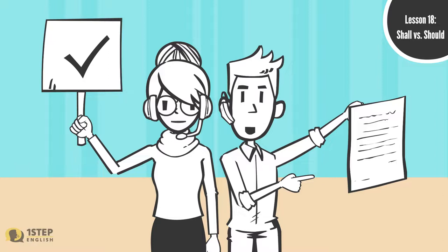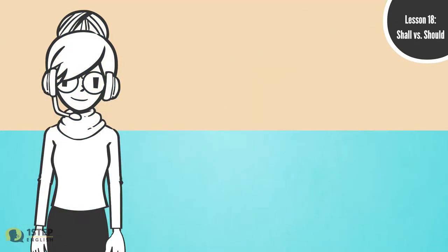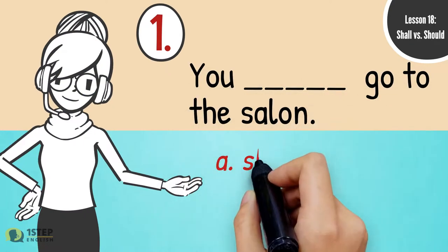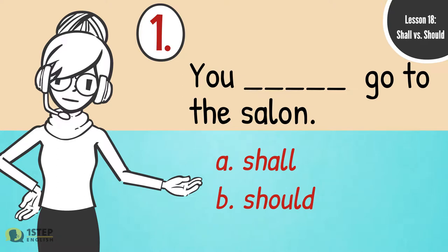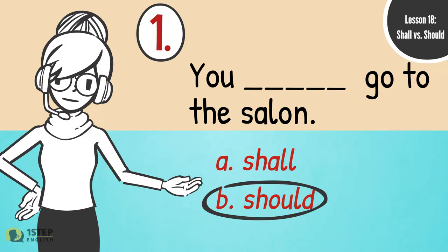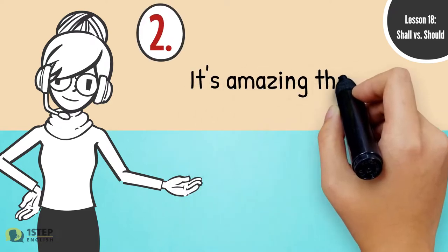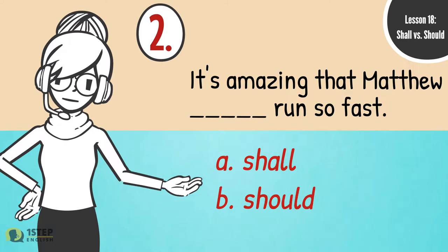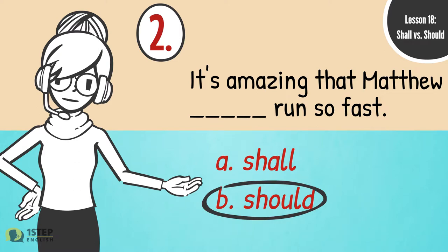Let's test your knowledge. Choose the letter of the correct answer. One: You blank go to the salon. A. Shall, B. Should. The correct answer is letter B — should. You should go to the salon. Two: It's amazing that Matthew blank run so fast. A. Shall, B. Should. The correct answer is letter B — should. It's amazing that Matthew should run so fast.